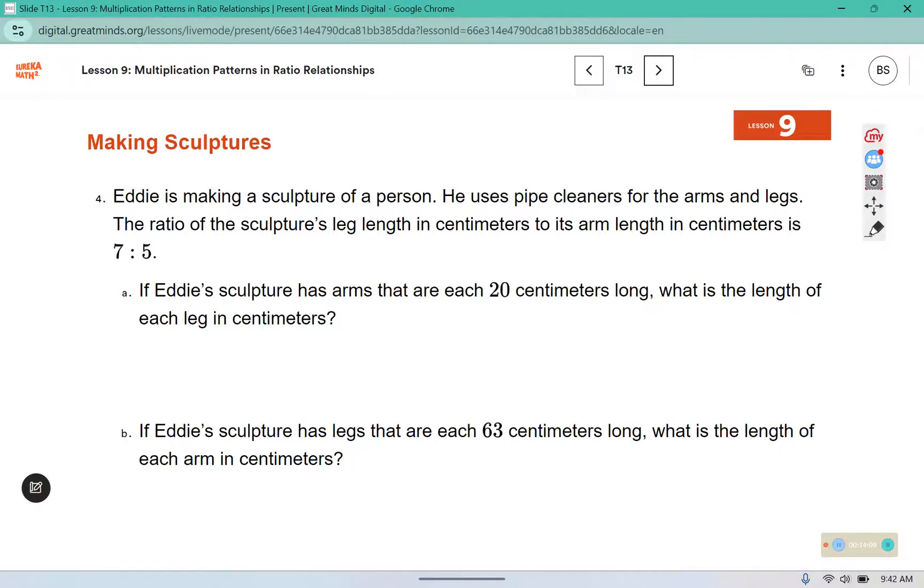All right, moving on to number 4. Eddie is making a sculpture of a person. He uses pipe cleaners for the arms and legs. The ratio of the sculpture's leg length in centimeters to its arm length in centimeters is 7 to 5. If Eddie's sculpture has arms that are 20 centimeters long, what is the length of each leg in centimeters?